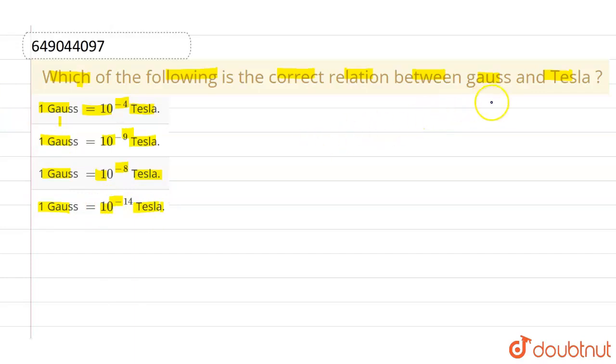Now let me tell you that as we know, both Gauss and Tesla are units to measure magnetic field strength.